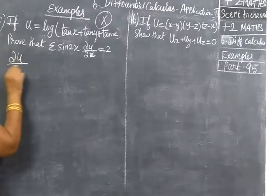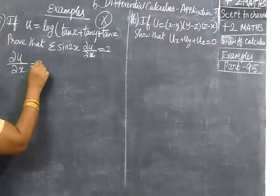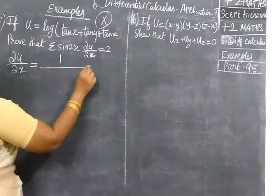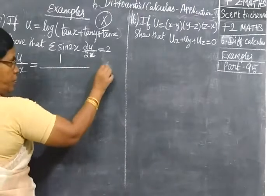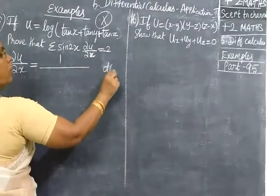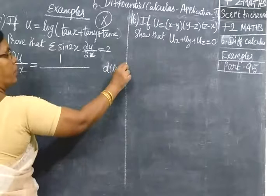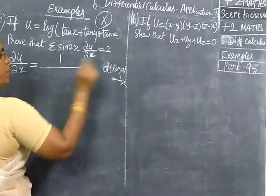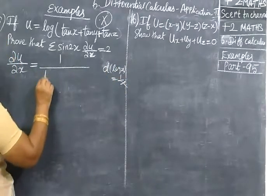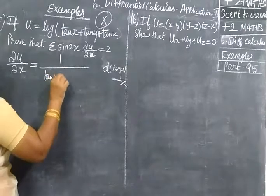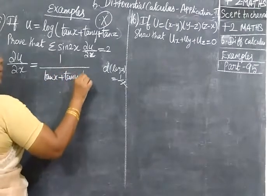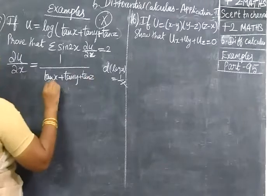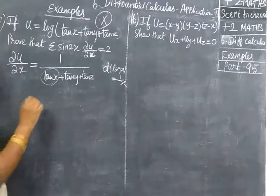So first sign du/dx equal to log with this one by. d of log x equal to one by x. This we know. So one by tan x plus tan y plus tan z. Into inner function. Tan is in u differentiation.